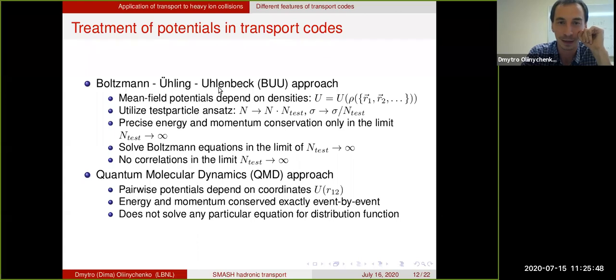It means that you are solving the Boltzmann equation, but Ulling and Ullenbech are relativistic extensions. Boltzmann originally wrote his equations non-relativistically, and U and U are for relativistic extension.